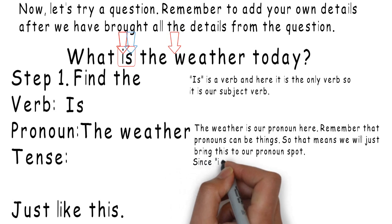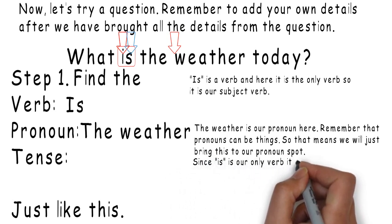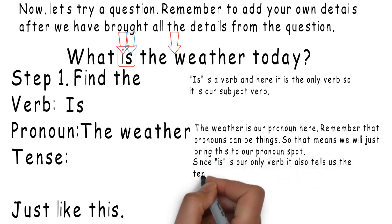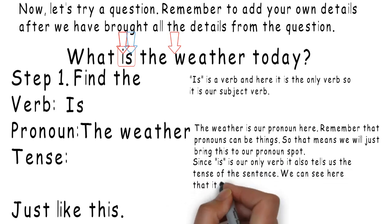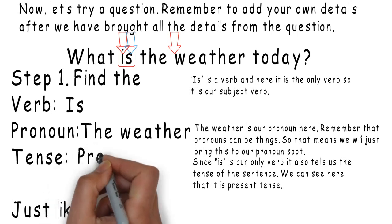Is. Since is is our only verb, it also tells us the tense of the sentence. We can see here that it is present tense. So, our tense is present.